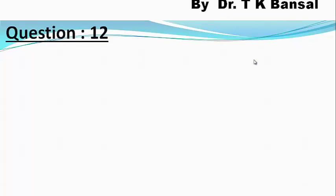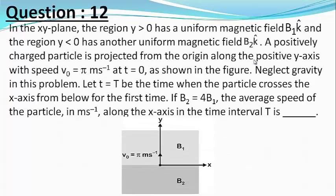Our question is, in the XY plane, the region Y>0 has a uniform magnetic field B1 k cap and the region Y<0 has another uniform magnetic field B2 k cap. A positively charged particle is projected from the origin along the positive Y axis with a speed V0 equals pi meters per second at t equal to zero as shown in the figure. Neglect gravity in this problem.